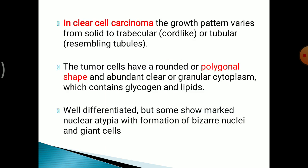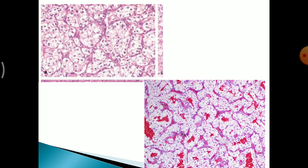In clear cell carcinoma, the growth pattern varies from solid to trabecular or tubular. The tumour cells have a rounded or polygonal shape and abundant clear or granular cytoplasm containing glycogen and lipids. Well-differentiated tumours are observed, but some show marked nuclear atypia with bizarre nuclei and giant cells. This H&E microphotograph shows clear cells with clear cytoplasm.